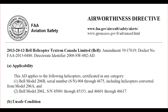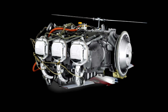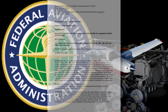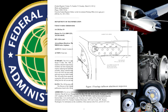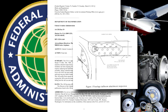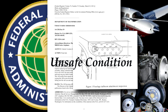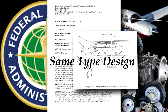FAA airworthiness directives are legally enforceable rules that apply to the following products: aircraft, aircraft engines, propellers, and appliances. The FAA issues an airworthiness directive addressing a product when we find that an unsafe condition exists in that product, and the condition is likely to exist or develop in another product of the same type design.